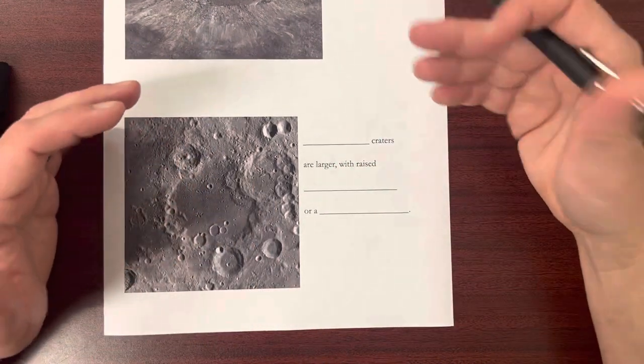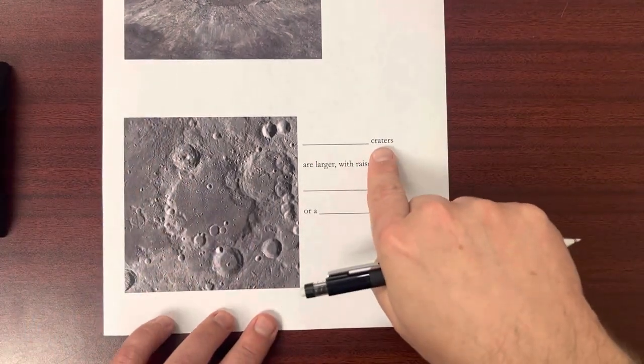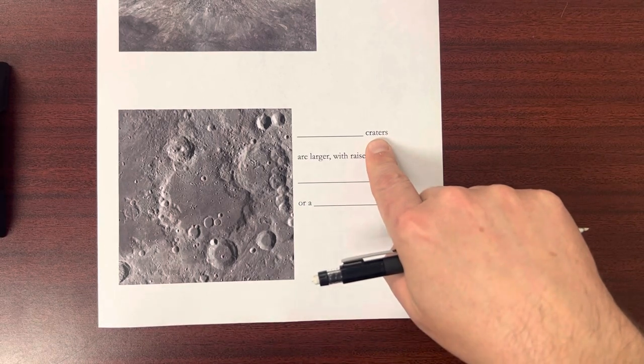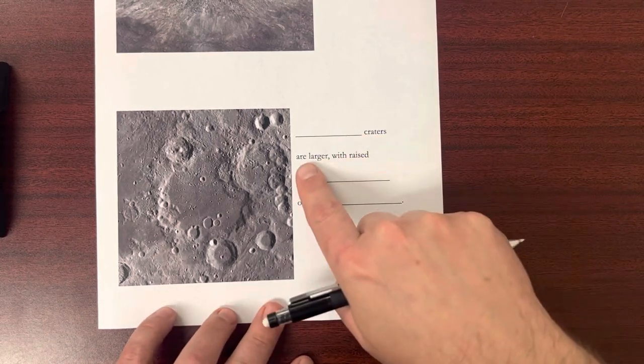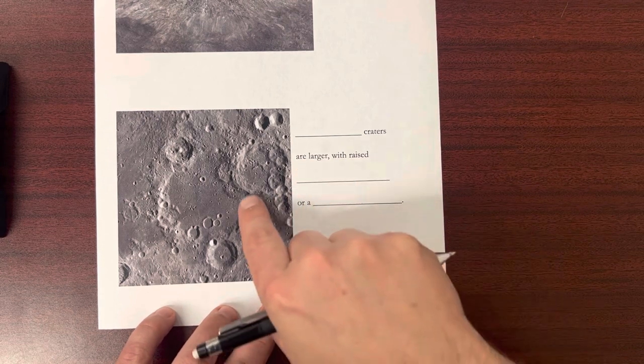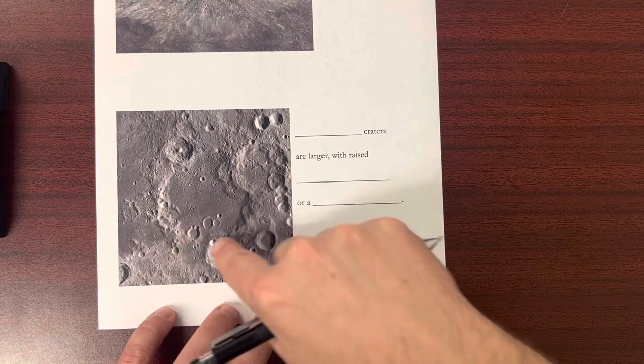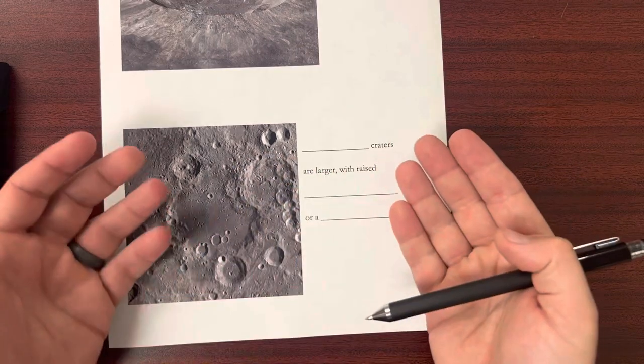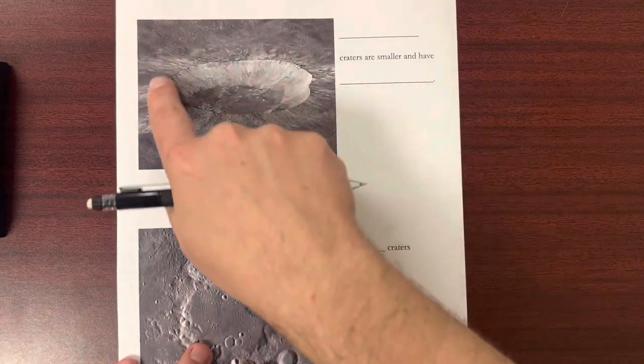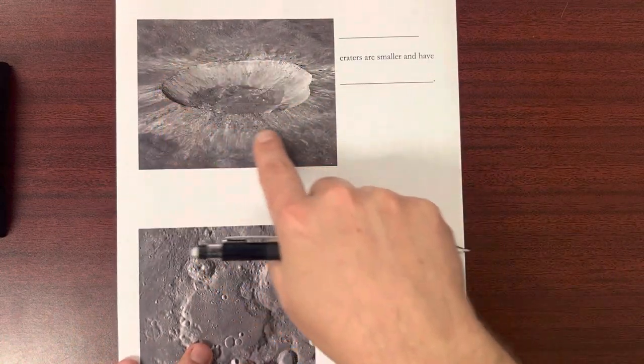And then as you get bigger, you get complex craters. Complex craters have more going on with them. They tend to be larger. Sometimes they'll have raised rings around the outside. So the ring on the outside is actually almost like a mountain range. It's lifted up as opposed to here, which is only slightly raised.